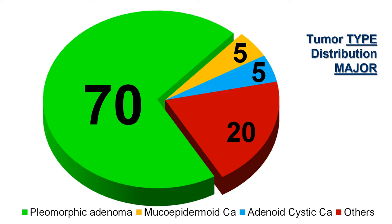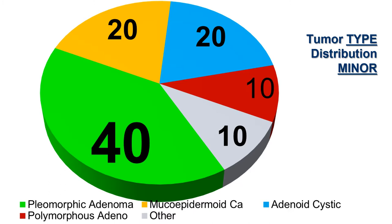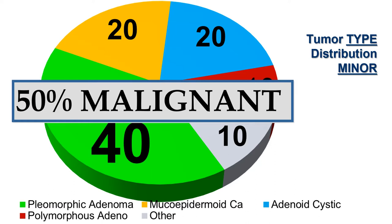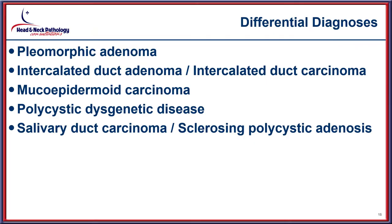Looking at diagnoses, nearly 70 percent are accounted for by pleomorphic adenoma, and nearly 80 percent of all major salivary gland lesions are benign. By contrast, in minor salivary gland locations, nearly 50 percent are malignant — making anatomic site of distribution an important diagnostic consideration.